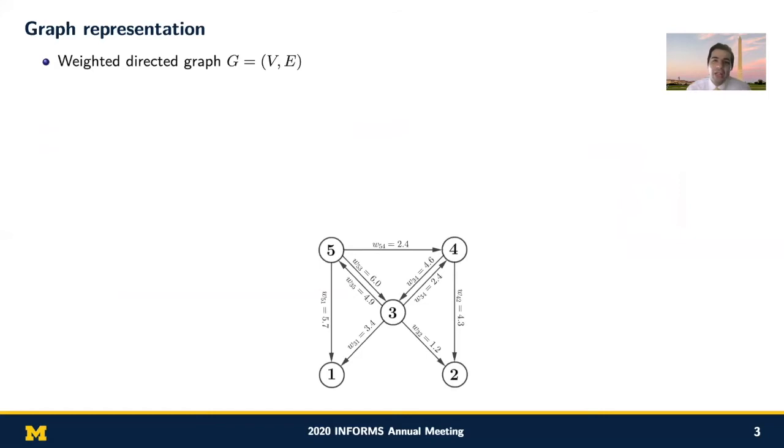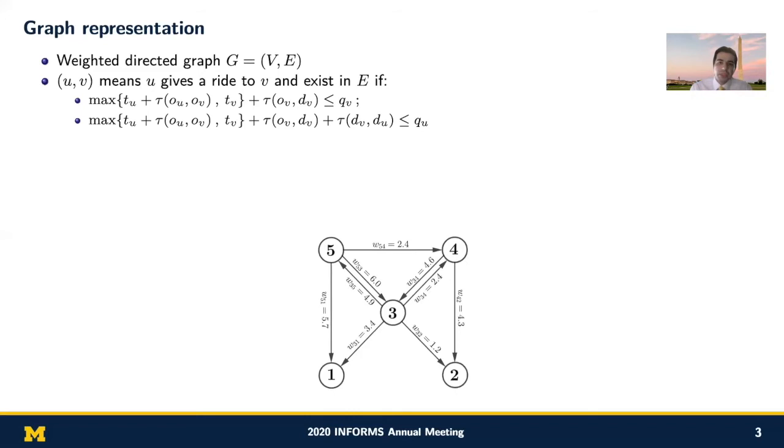Okay, now, let me describe that our system of interest can be actually represented by a weighted directed graph with node set V and edge set E. As shown in this example, you see that every user is shown by a node. Also, a directed edge from node U to node V means that user U is giving a ride to user V.